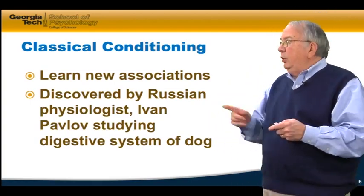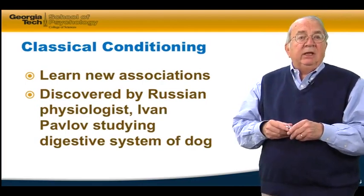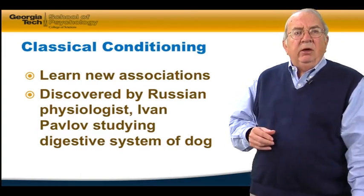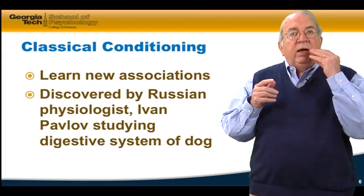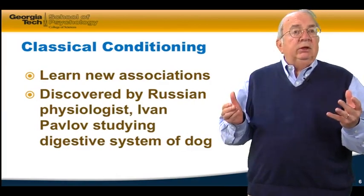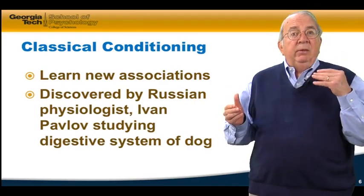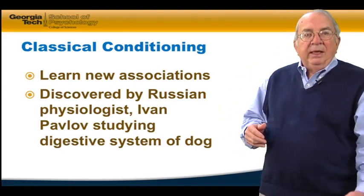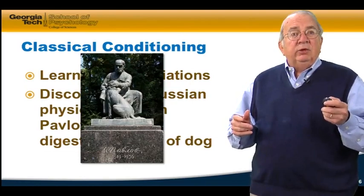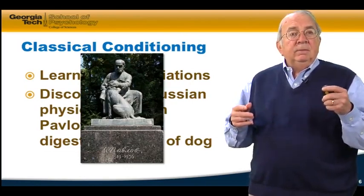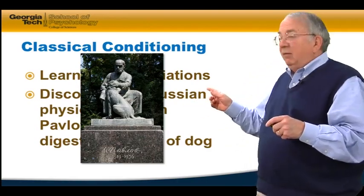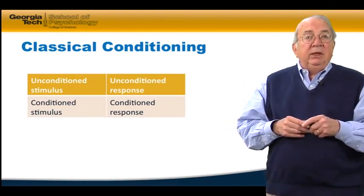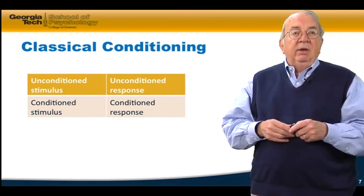Classical conditioning is where we learn new associations. It was discovered by a Russian physiologist, Ivan Pavlov, who was really studying the digestive system of the dog. He noticed that when the staff came into the room — the dog was hooked up to measure saliva — when they came into the room, the dog started salivating, not when the food powder was sprayed into the mouth, but when the people came into the room to spray it. Here's a statue of Pavlov with one of his dogs in Russia. He actually won the Nobel Prize before he discovered classical conditioning, because of his understanding of the digestive system of animals.